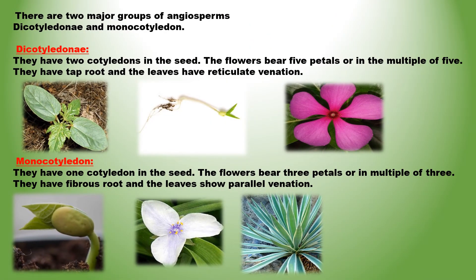There are two major groups of angiosperms: dicotyledon and monocotyledon. Dicotyledons have two cotyledons in the seed. The flowers bear 5 petals or multiples of 5. They have a taproot and the leaves have reticulate venation. Examples include mustard, pea, gram plant, etc.